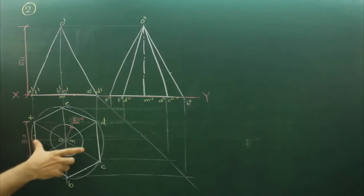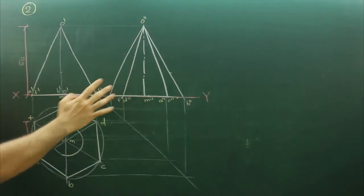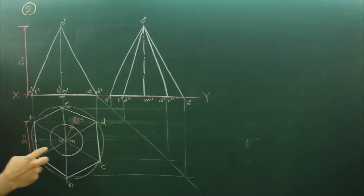So first we will draw hexagon, front view, side view and from this point we will draw radius 15 and then we will draw cutting plane line in top view which is inclined at 30 degrees.